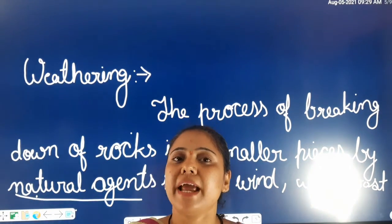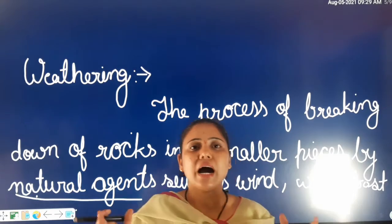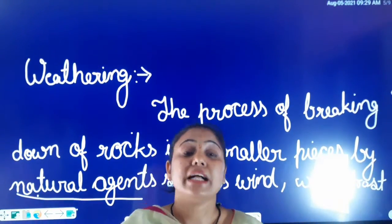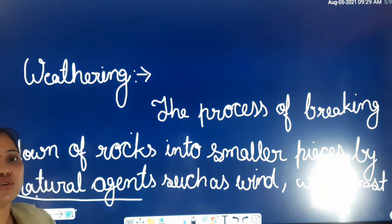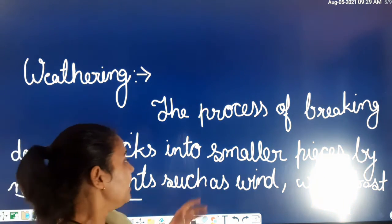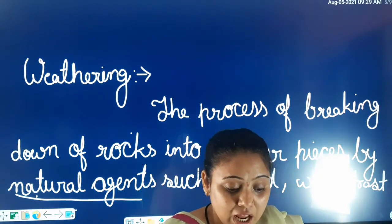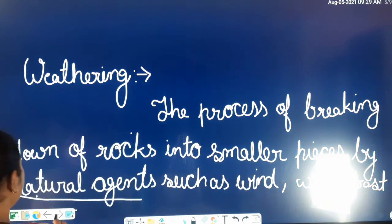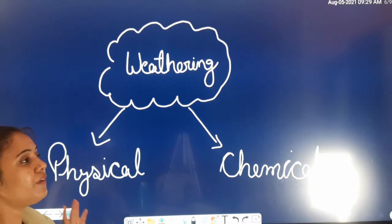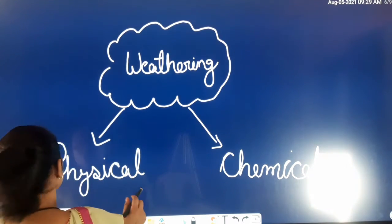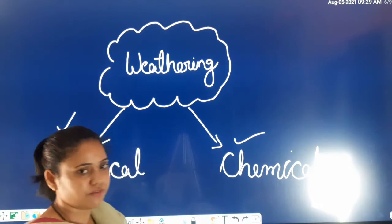How is the breakdown of rocks done? The natural agents participate — that is the wind, water, frost, and roots of plants. Now, next is the weathering types. Weathering has two types: first is physical weathering, and second is chemical weathering.